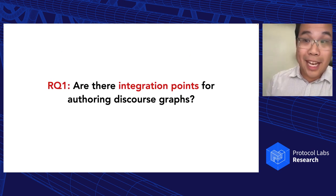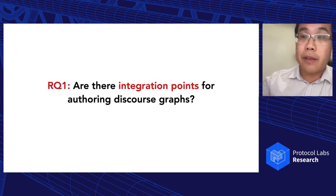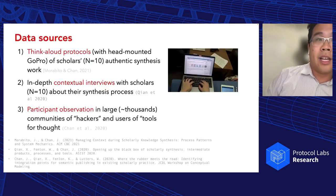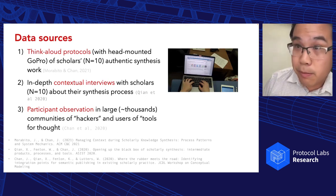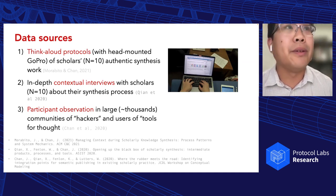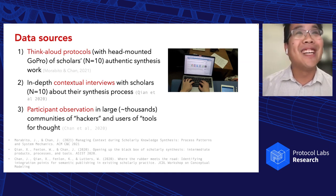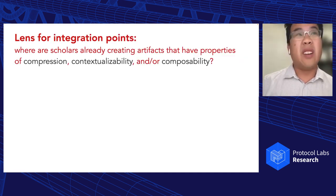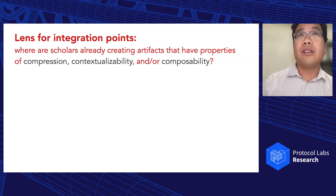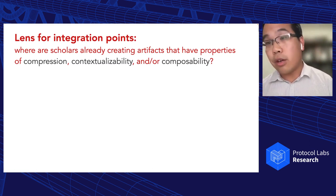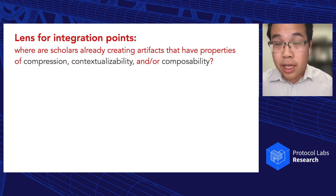I'll focus mostly on the second question. We've done a fair amount of user research, participant observation, and need-finding to understand where the integration points are. We've put GoPros on people's heads while they do literature reviews, done interviews, and done participant observation in communities of hackers and users of tools of thought. We've been looking for where scholars already create artifacts that have properties of compression, contextualizability, and composability — the things that discourse graphs provide.